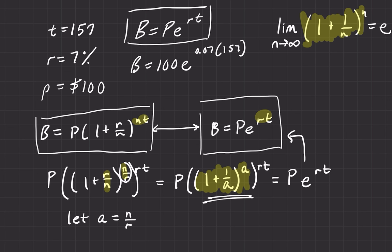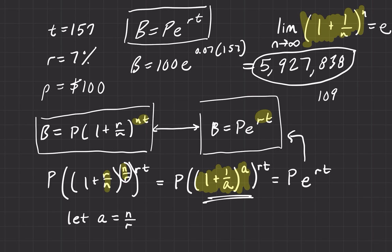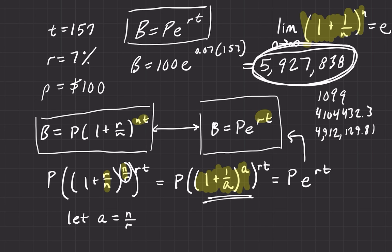If we do the calculation for continuous compounding in our original problem, the number goes even higher — it gets us into almost $6 million: $5,927,838. To recap: simple interest gave us $1,199; compounding once a year gave $4,104,432.30; semi-annually gave $4,912,129.81; and continuous compounding gives almost $6 million. Continuous compounding growth is amazing and quite the useful tool. In problems you'll see this often — use the PERT formula when you have continuous compounding growth.